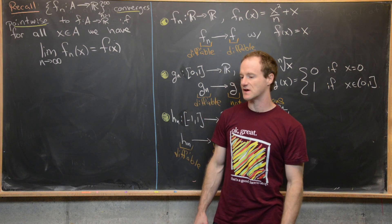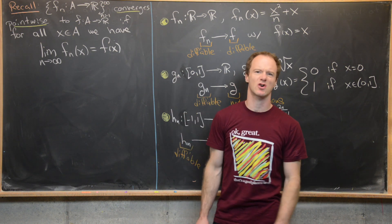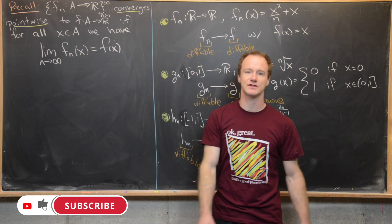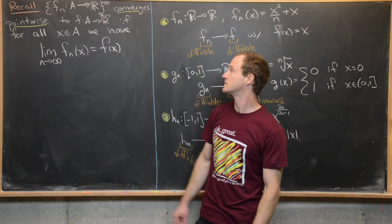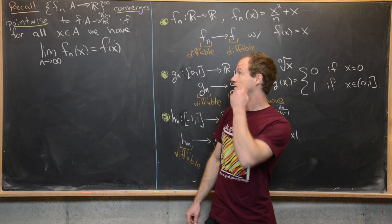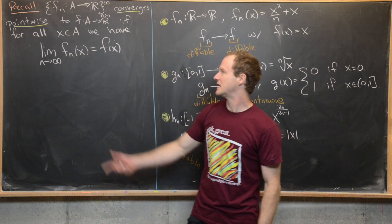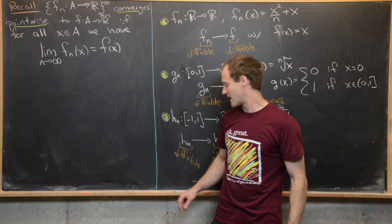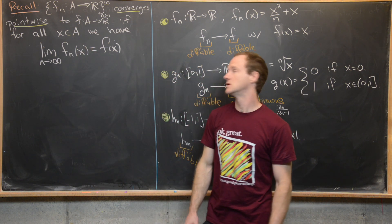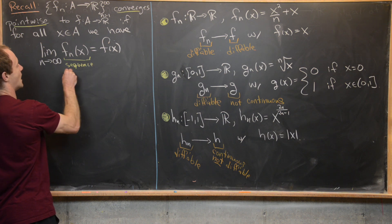In a previous video, we started to look at sequences of functions and the concept of pointwise convergence. If we have a sequence of functions f_n, all functions from A to the real numbers indexed over the natural numbers, we say that sequence converges pointwise to a function f from A to ℝ if for all x in A, the limit as n goes to infinity of f_n(x) equals f(x). Note that by fixing an arbitrary x, we have a sequence of numbers at that stage.